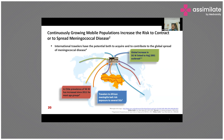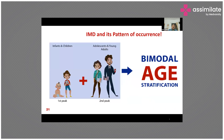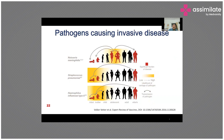Travelers to the African meningitis belt are advised to receive a meningococcal vaccine covering at least four serogroups, particularly during the dry season from December to June. The disease has two peaks of incidence, making it important to identify which age groups to target, especially since immunization against this disease is not yet a routine practice.